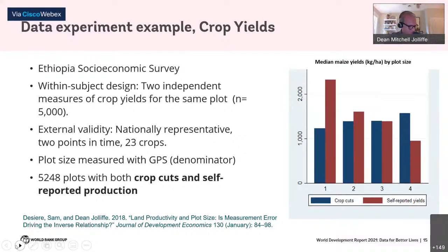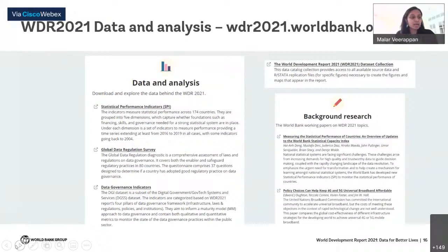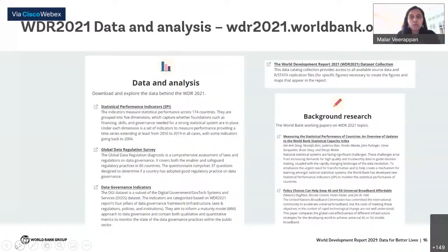The WDR 2021 advocates for data and analysis to be shared and publicly made available, advancing the principles of reuse and repurposing that Bob and Talib discussed. In the same spirit, we have made available all datasets and analysis from the report in the World Bank's data catalog and the WDR website. There are three datasets that are original contributions of the WDR, and two are being covered in today's presentation. I will focus on the Statistical Performance Indicators.